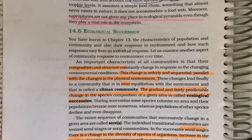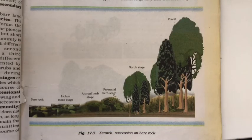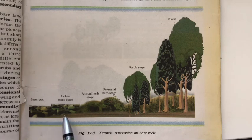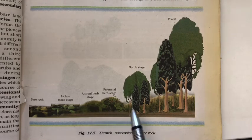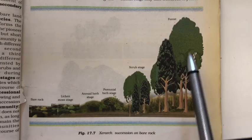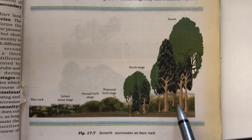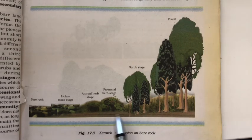Another topic in this chapter is ecological succession — the gradual and fairly predictable changes in the species composition of a given area. For example, a barren rock will not stay barren forever. Lichens start growing there, adding organic matter. This is followed by the moss or lichen stage, then annual herb stage, perennial herb stage, scrub (shrubs), and finally a climax forest community is established.